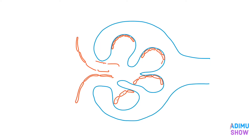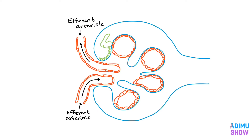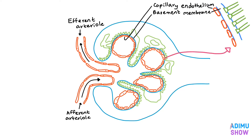Blood supply to the kidney is from the renal artery, which is divided into many branches in the kidney. The afferent arteriole brings blood to the glomerulus, then blood filters through the glomerulus. The efferent arteriole carries blood away from the glomerulus.